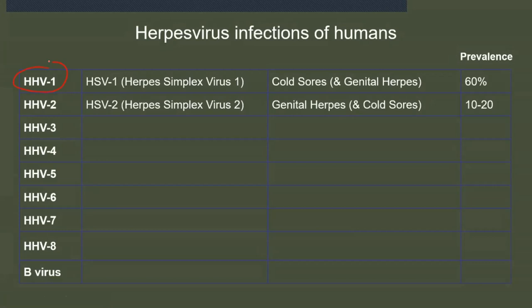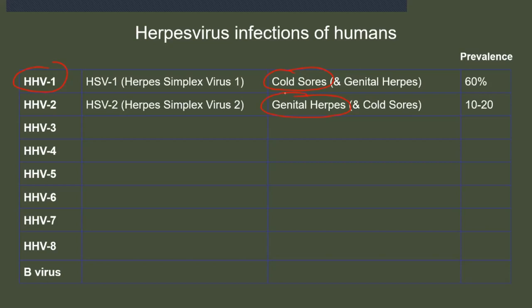You may have heard of herpes simplex 1 and herpes simplex 2. These cause cold sores and genital herpes. Herpes simplex 1 usually causes cold sores and herpes simplex 2 usually causes genital herpes, but both viruses can actually cause sores in both locations. About 60% of people worldwide have herpes simplex 1 and about 10–20% have herpes simplex 2.